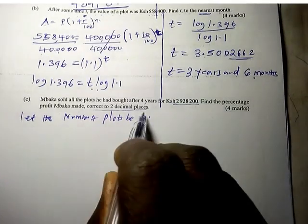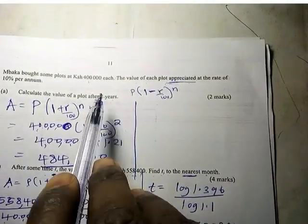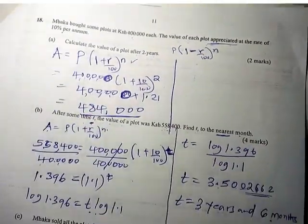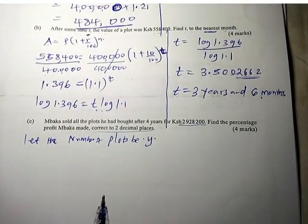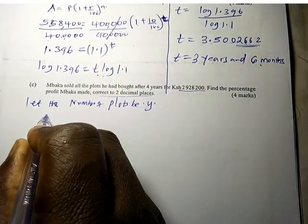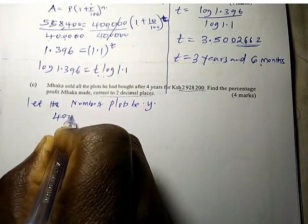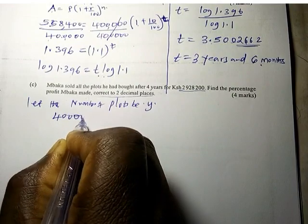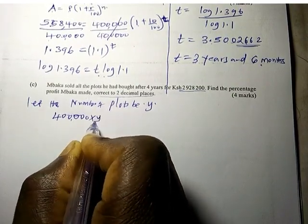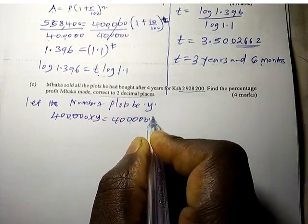So you say, let the number of plots be Y. If the number of plots is Y, we know he was selling one plot at 400,000. So all of the plots will be Kenya Shillings 400,000 times Y, which is 400,000Y.